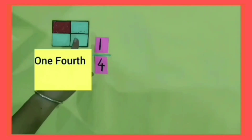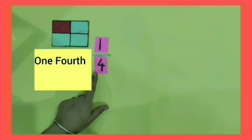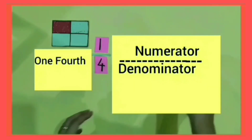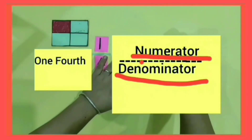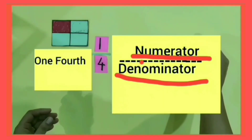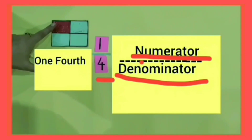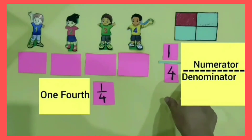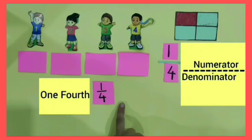Now you have learned that when we divide one whole thing into four equal parts, each part is known as one-fourth and in numbers we write it as 1/4. The total number of parts into which a thing is divided is known as the denominator, and the part which is taken out is called the numerator. In this rectangular shape, there are four total parts, so four is our denominator, and one part is colored, so one is our numerator.